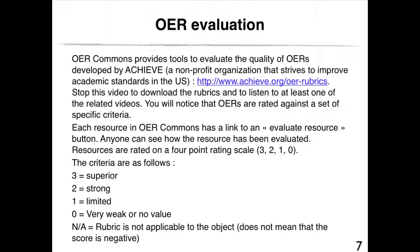OERs are rated against a set of specific criteria. Each resource in OER Commons has a link to an 'evaluate resource' button, and anyone can see how the resource has been evaluated. Resources are rated on a 4-point rating scale: 3 is for superior, 2 is for strong, 1 is for limited, and 0 is for very weak or no value. There is also the option of using the non-applicable rating, meaning the rubric is not applicable to the object — it does not mean the score is negative, simply that the object cannot be rated against any of the rubric criteria.